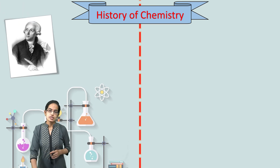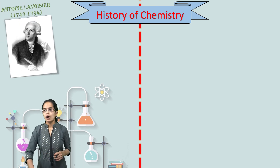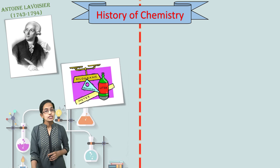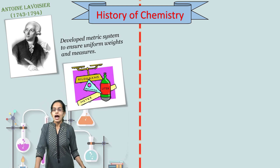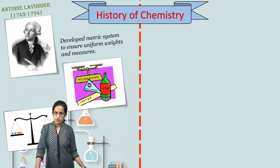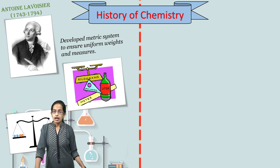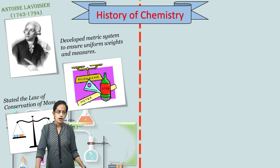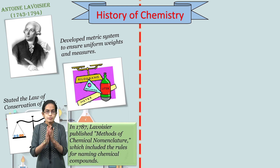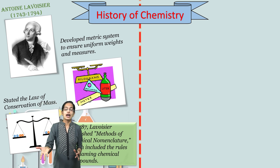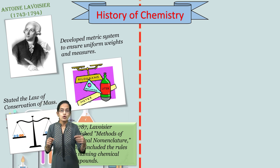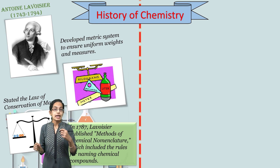The very first scientist that we talk about is Lavoisier. He worked on the metric systems and he ensured that there were uniform weights and measures. He stated the law of conservation of mass. He also explained the method of chemical nomenclature, which talked about the rules for naming chemical compounds.